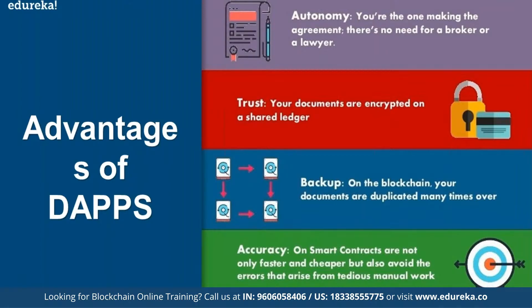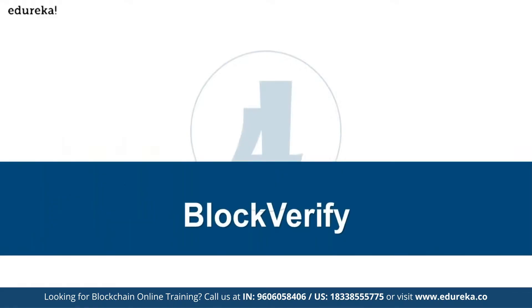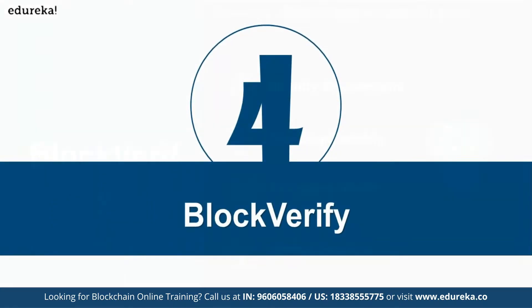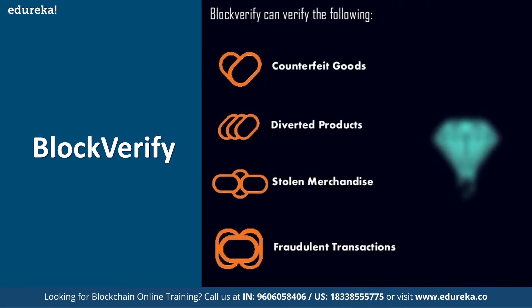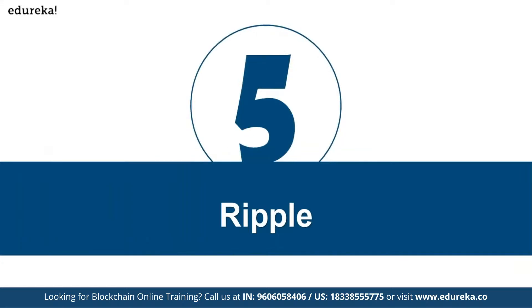The accuracy is going to be a hundred percent and it cannot be avoided. There is also a concept called block verify — identifying counterfeits, duplicates, company verification, or global solutions. Different types of verifications are available, and counterfeit goods, diverted products, stolen merchandise, or fraudulent transactions can all be verified as part of the blockchain, so these kinds of activities can be controlled very well.